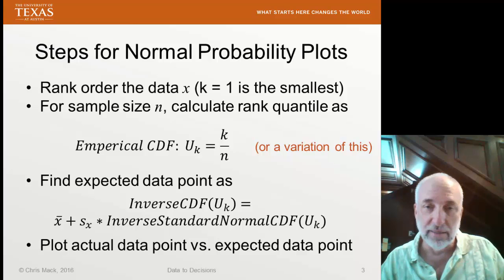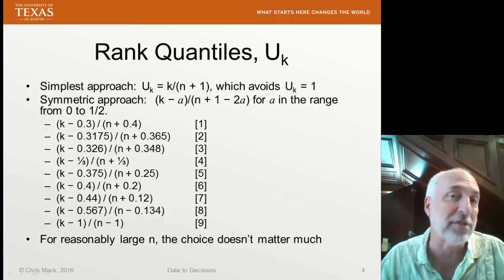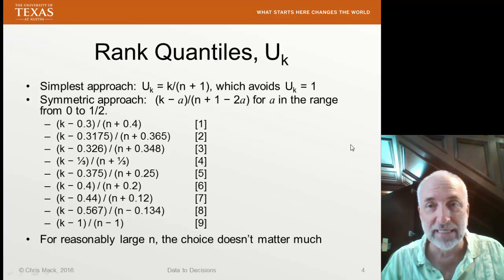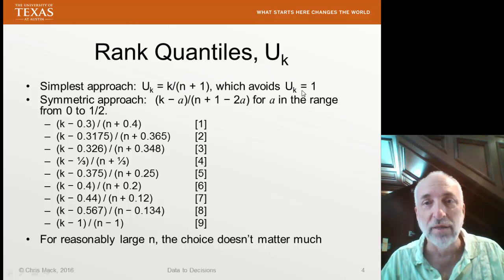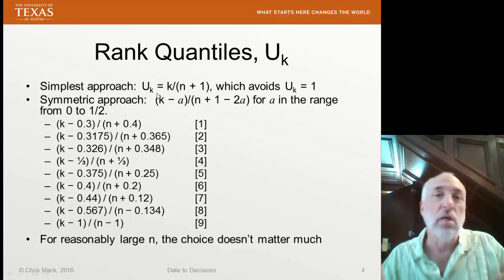Now, here I say the empirical CDF is k over n, or some variation of it. Well, here are some of the variations that people use. What you want to avoid is Uk equal to 1, because if I just had k over n like I showed before, and at k equals n, then Uk must be equal to 1.